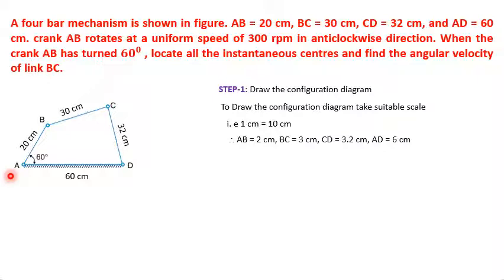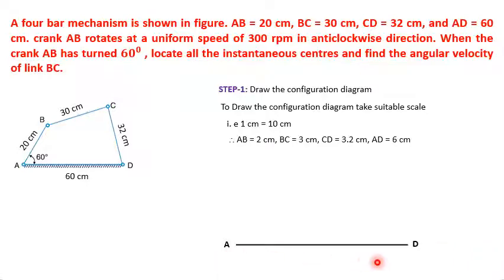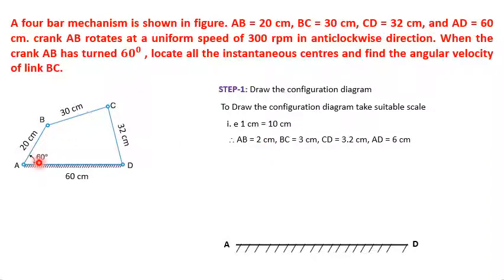To draw the configuration diagram, note that AD is the fixed link. Take 6 cm and draw a horizontal line representing AD. Next, AB is the crank with length 2 cm and inside angle 60 degrees — draw a line of length 2 cm at 60 degrees from A to get point B.